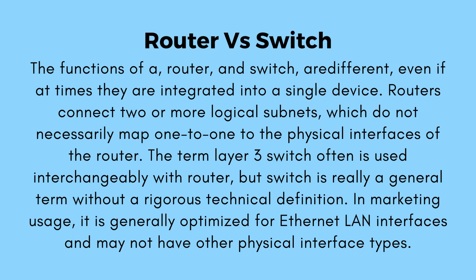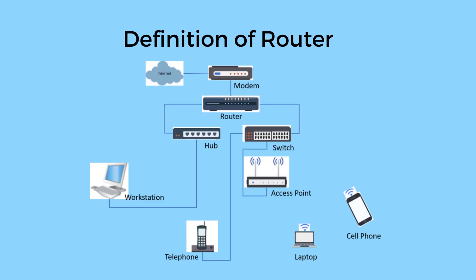Routers connect two or more logical subnets which do not necessarily map one-to-one to the physical interfaces of the router. The term layer 3 switch is often used interchangeably with router, but switch is really a general term without a rigorous technical definition. In marketing usage, it is generally optimized for Ethernet LAN interfaces and may not have other physical interface types.